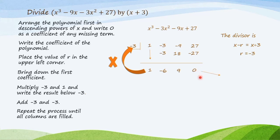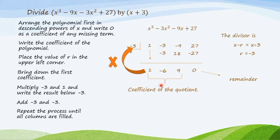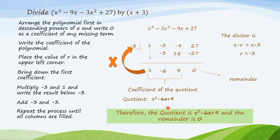The last digit obtained is the value of the remainder. The numbers 1, negative 6, and 9 are the coefficients of the quotient. To get the degree of the quotient, just subtract 1 from the degree of the dividend. So the quotient is x squared minus 6x plus 9, and the remainder is 0.